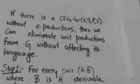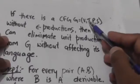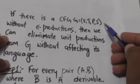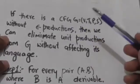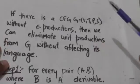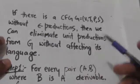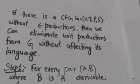Now, if there is a context-free grammar G defined by the quadruple (V, T, P, S), where V is the set of variables, T is the set of terminals, P is the set of productions, and S is the start symbol — if the grammar G is without empty productions — then we can eliminate all unit productions from grammar G without affecting its language.